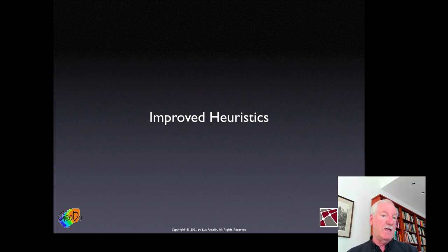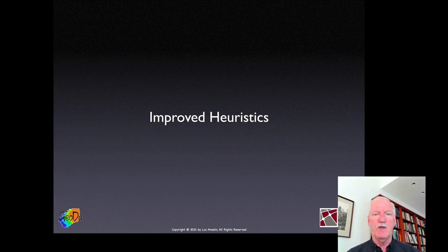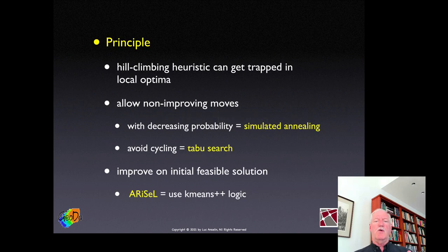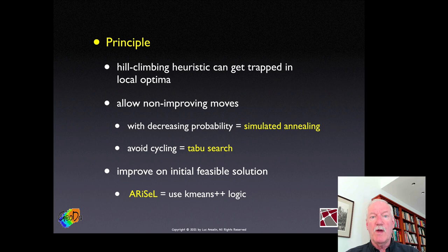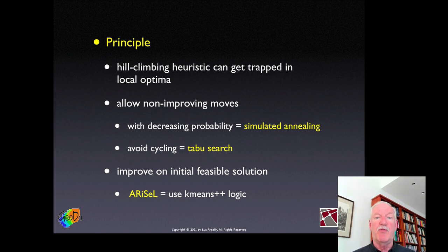In part that's one of its strengths, because unlike the approach for SKATER and RedCap, which were based on hierarchical groupings where once you had them you couldn't move a unit from one grouping to another, in the partitioning methods you can—so there's increased flexibility. However, the hill-climbing heuristic can easily be trapped in local optima, so one way to deal with this is to not be as greedy and allow non-improving moves.